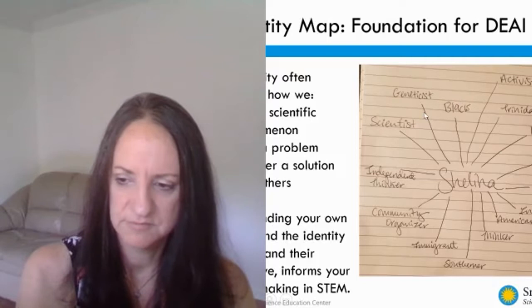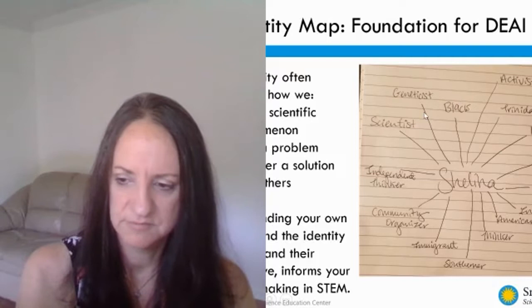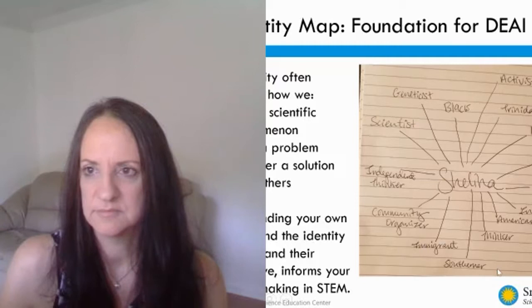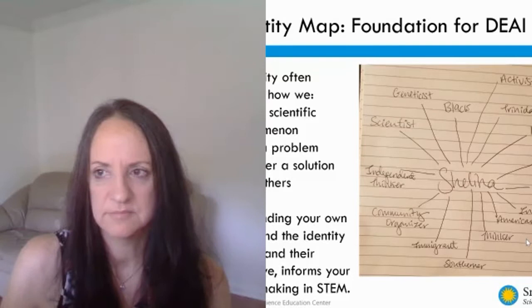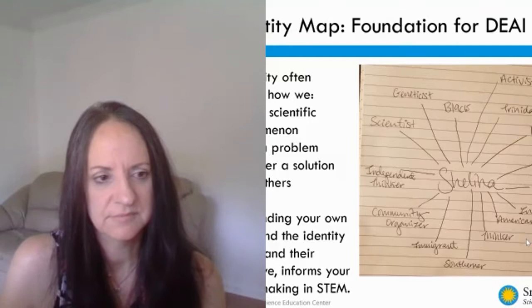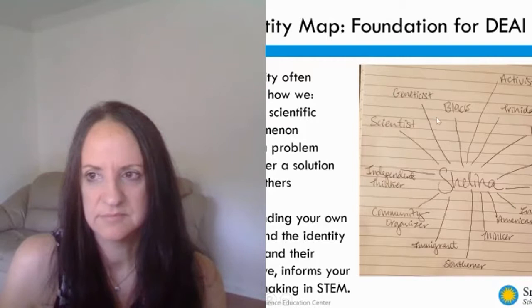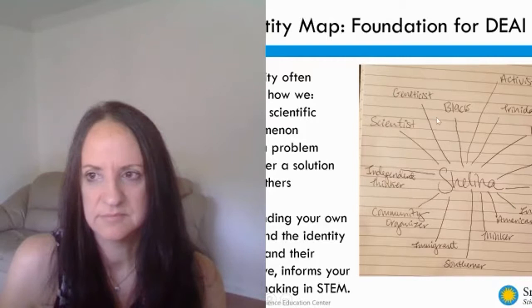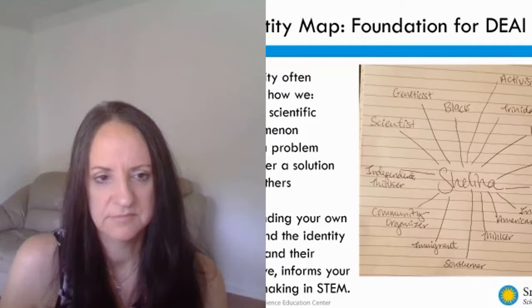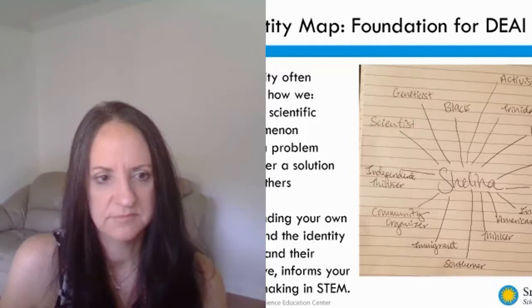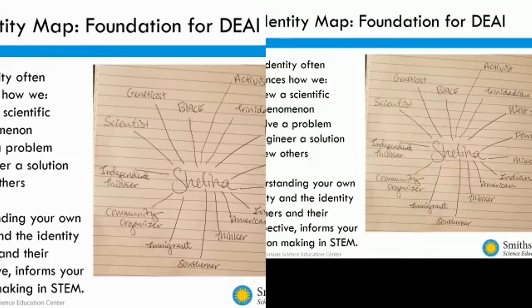Shalina shares her own identity markers: she was born in Trinidad and Tobago, so two markers are Trinidadian and West Indian. She's female, a geneticist by training with a PhD in genetics, a scientist, independent thinker, community organizer, and an immigrant to America. When she moved to America, she grew up in Georgia, making her a Southerner. She considers herself a deep thinker and identifies as Black. These are just some of her identity markers, and your identity map may look very different.